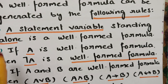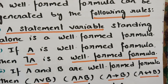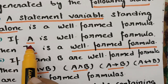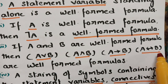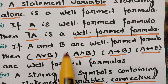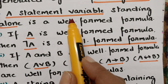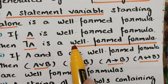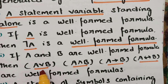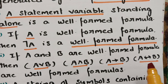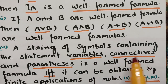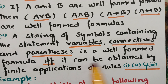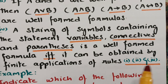So what are rules 1, 2, and 3? Rule 1: a statement variable standing alone is a well-formed formula. Rule 2: if A is a well-formed formula, negation A is also a well-formed formula. Rule 3: A conjunction B, A disjunction B, A implication B, A biconditional B — these are all well-formed formulas. And a string containing variables, connectives, and parenthesis is a WFF if it can be obtained by finite applications of these rules.